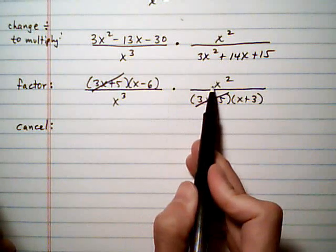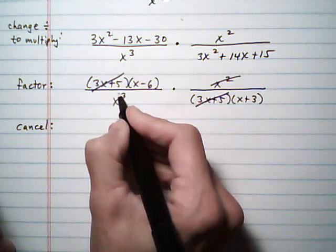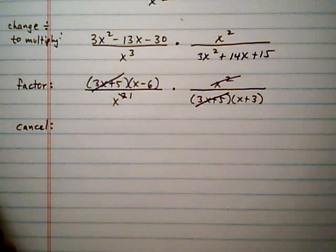We have an x cubed and x squared. That means that two x's can cancel on the top, two on the bottom, leaving us one on the bottom. And that looks like it.